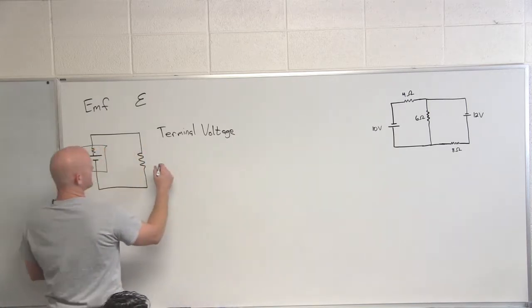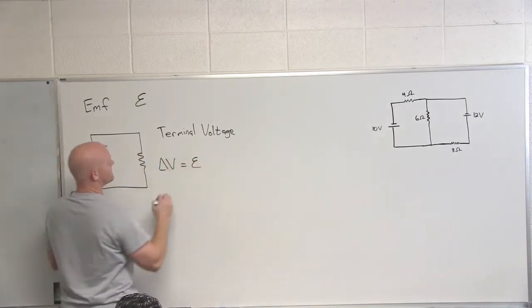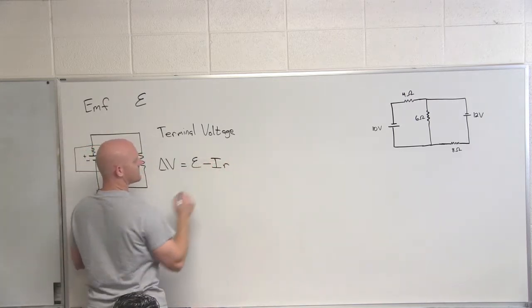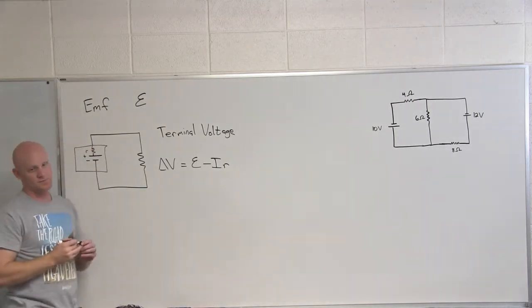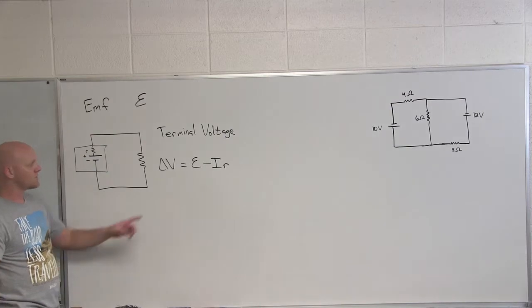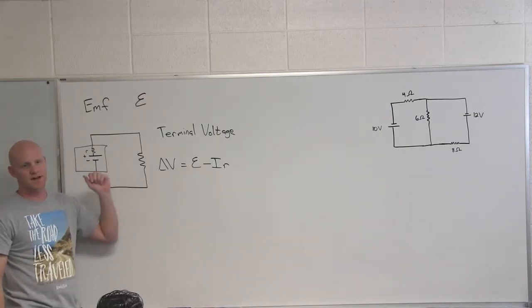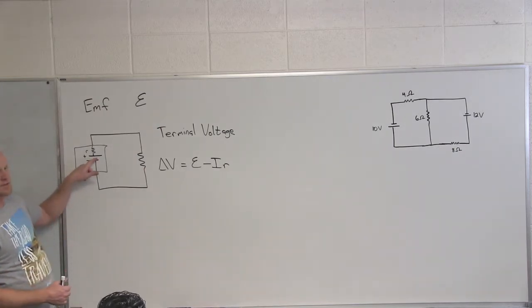Correct. So if you take your terminal voltage, ΔV here, it'll be equal to the EMF of your battery but minus the current flowing through it times the resistance of it, where little r here is the resistance of your internal resistance of that battery. So if you subtract off that voltage drop across that resistance, the terminal voltage is what you got left. So the epsilon is still this guy here.